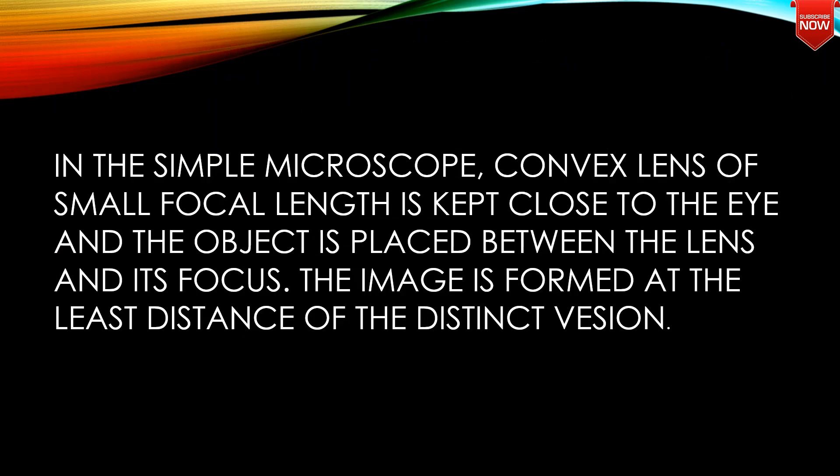In a simple microscope, a convex lens of small focal length is kept close to the eye and the object is placed between the lens and its focus. The image is formed at the least distance of distinct vision.